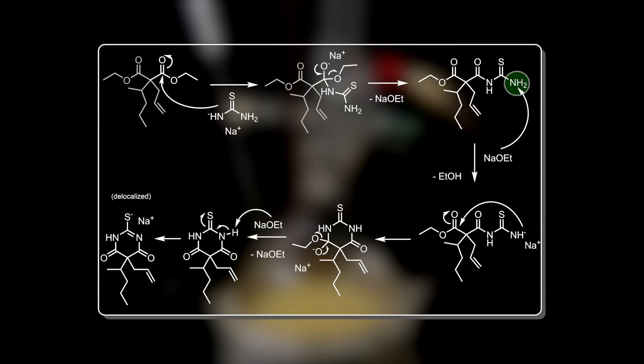The now attached thiourea can undergo deprotonation by sodium ethoxide again, but on the other side. This will then attack the other ester intramolecularly, giving a cyclized intermediate. Then the same as before happens, and it kicks off the ethoxide. Finally, sodium ethoxide can deprotonate the formed barbiturate, which is a bit acidic, giving the corresponding sodium salt of the product thiamylal.